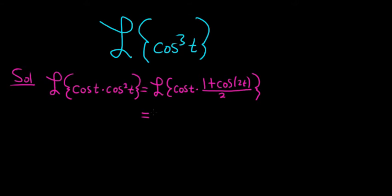We can rewrite this as the Laplace of cosine t. I'm going to show an extra step here. This is 1 over 2 plus cosine 2t over 2. I usually skip this step and go to the next step below.